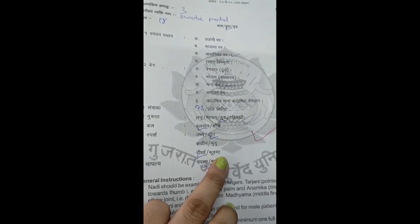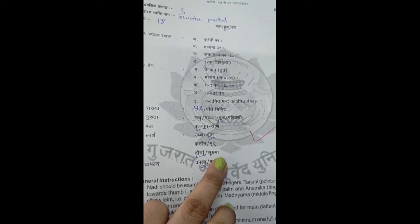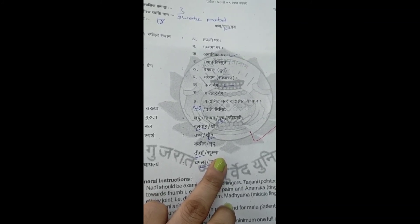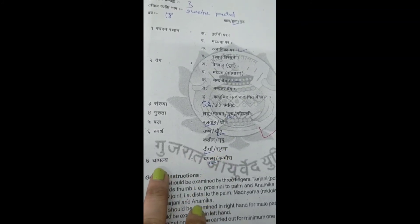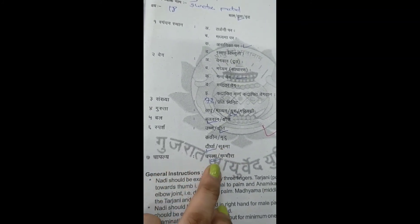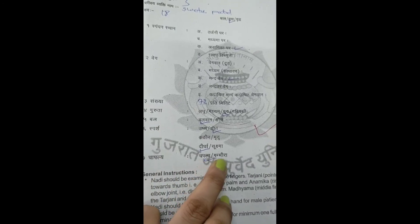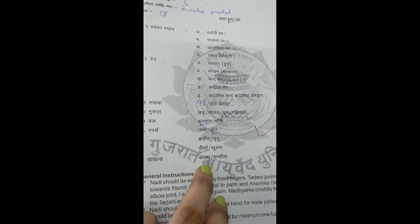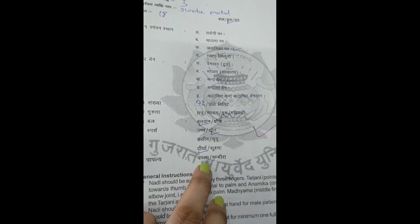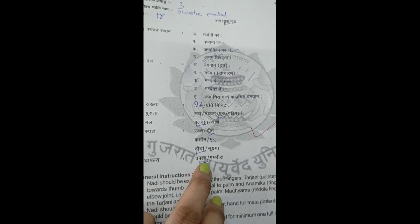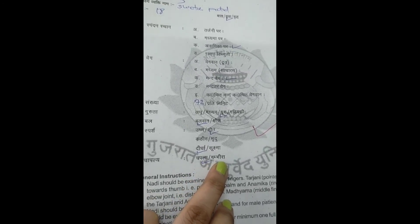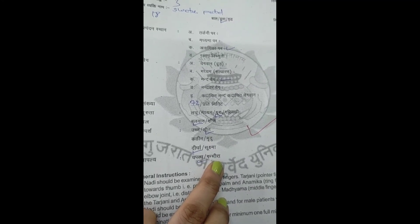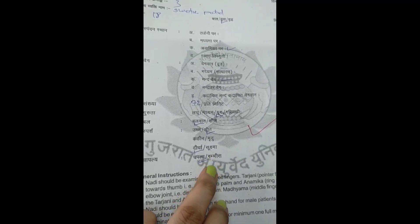The duration between two pulses is also observed — it could be shorter or longer. Then Chapalya refers to the steadiness of the pulse: it can be shaking, trembling, inconsistent, or unsteady versus steady, stable, profound, and serious.